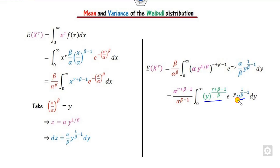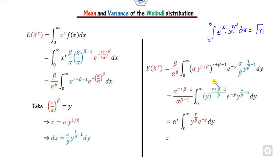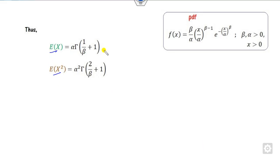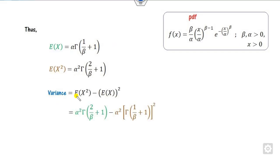We can add the powers of y to obtain the final integral. This integral is recognized as a gamma function: integral of e^(−y) times y^(n−1) equals Gamma(n). Here, n equals (r/beta) + 1, giving Gamma((r/beta) + 1). Taking r equal to 1 gives E(x), the mean, and r equal to 2 gives E(x²). From E(x) and E(x²) we substitute to compute the variance. So this is the mean and this is the variance of the Weibull distribution for different values of alpha and beta.